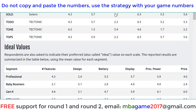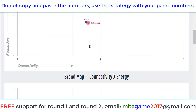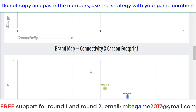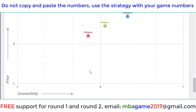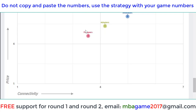Let's check one more example for the Vodai market. If you see the product here, the Sol9 sells very well for the follower segment, but not for the adopter and not for the innovator. If you want to sell better, reduce the price closer to the follower segment and then you can sell much better.